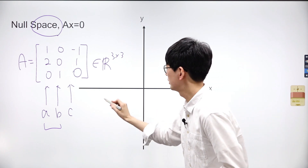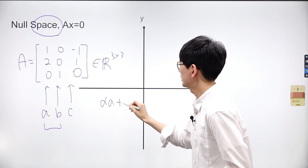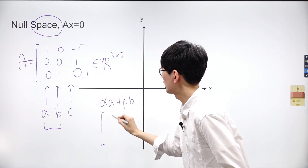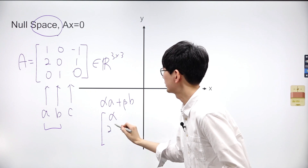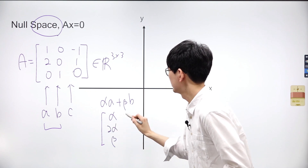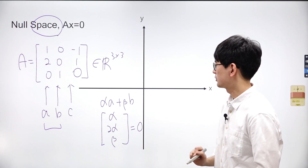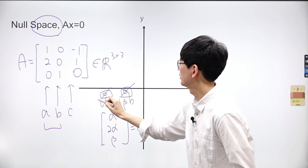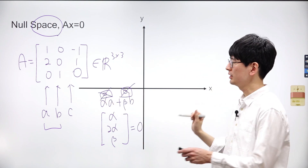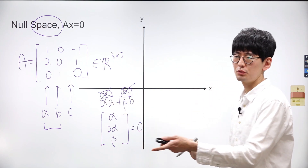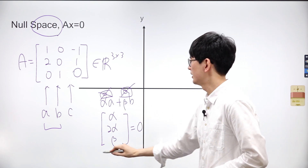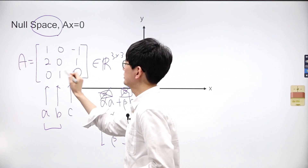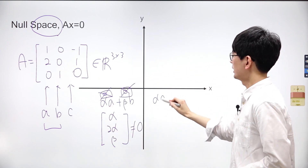To begin, we'll examine vectors A and B for linear independence. We employ the form alpha A plus beta B. The resulting linear combination of vectors A and B will yield alpha, 2 alpha, and beta. Is there any combination of alpha and beta that results in zero? Yes, but only when both alpha and beta are zero. If vectors A and B were linearly dependent, there would be another combination besides 0 and 0 that yields 0. So we've established that vectors A and B are linearly independent.